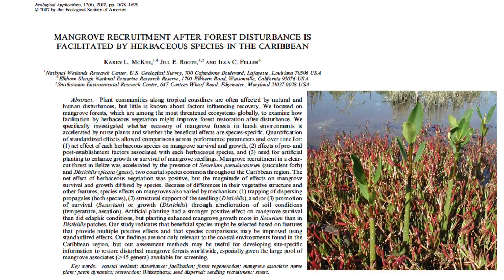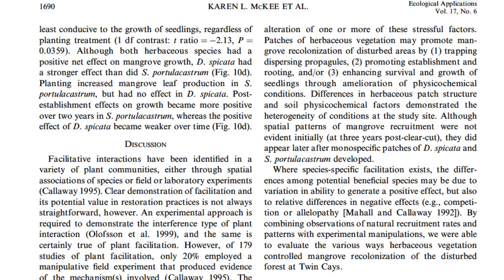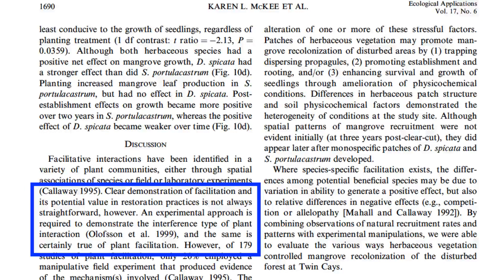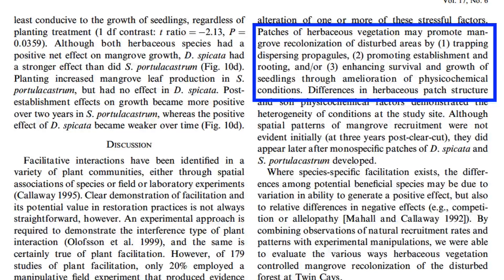This is a paper I wrote about how herbaceous coastal plants facilitate mangrove reestablishment in a clear-cut forest. I began the discussion by pointing out that facilitative interactions occur in a variety of plant communities, which quickly reorients the reader to the main topic. I then explained why a manipulative experimental approach was necessary to demonstrate plant facilitation and provided examples from the literature. You also want to remind the reader of the main finding — in this example, it came in the second paragraph: herbaceous vegetation clearly facilitated recolonization of mangroves in a disturbed forest. The next paragraph summarized three mechanisms whereby such facilitation may operate: trapping propagules, promoting rooting, and ameliorating soil factors. That list foreshadowed how the remaining discussion would be structured.